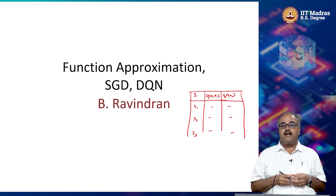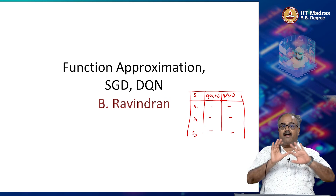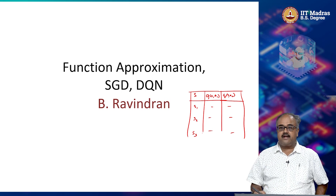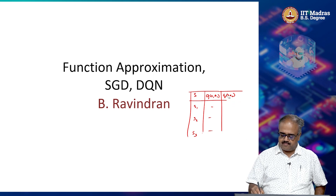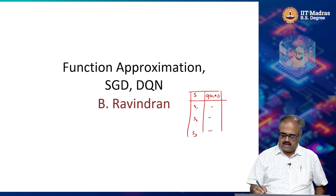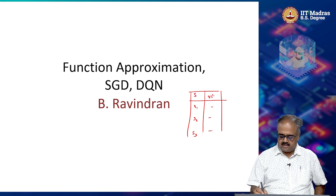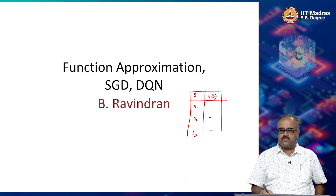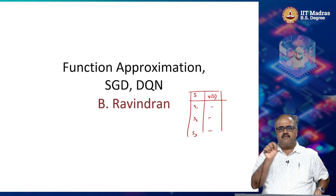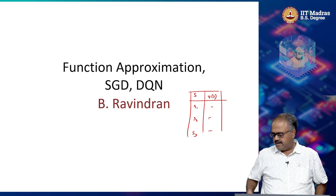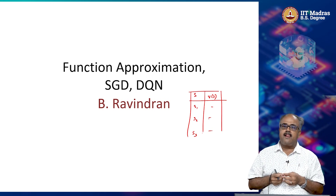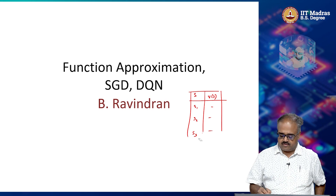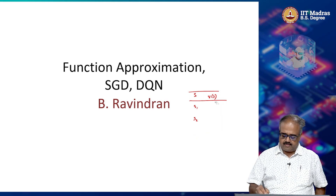So far we have been making the assumption that the value function, whether it is Q or V, is stored in this kind of a lookup table format. If it is the value function V that you are storing, then you would have just V(s). Then for each state s1, s2, you will have this. Remember that grid world we drew and then we filled in the value function for every state — it will actually be stored like that. The value function itself will be stored like that; that is the assumption so far.